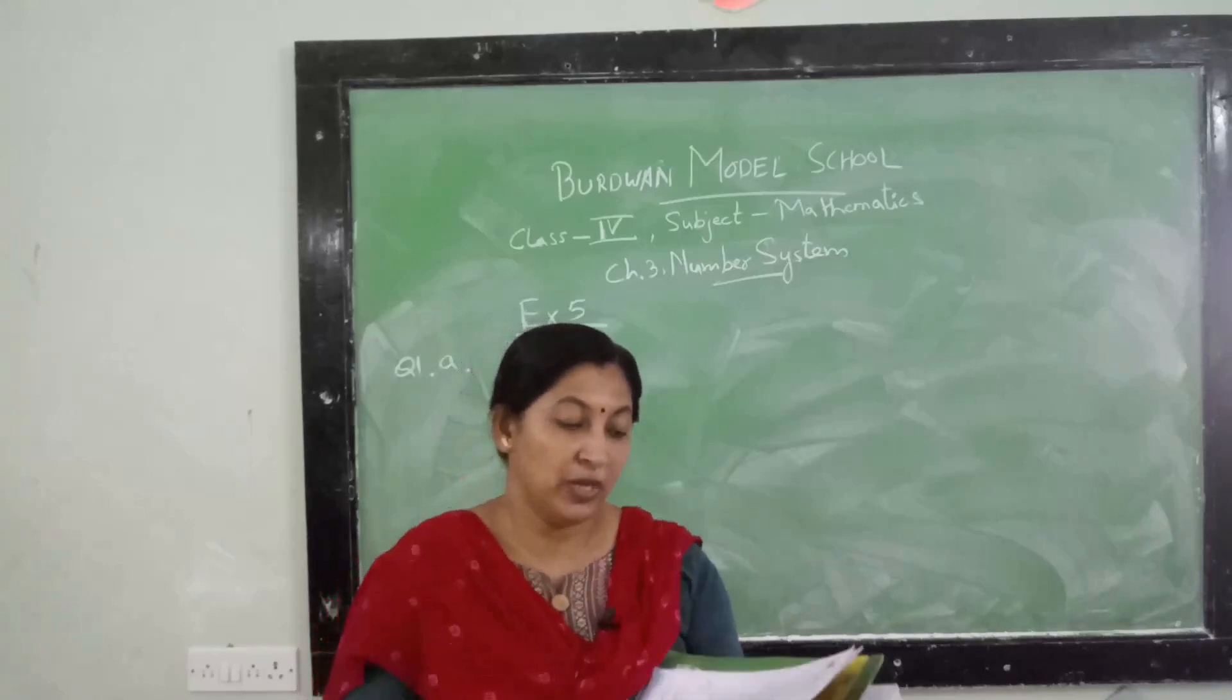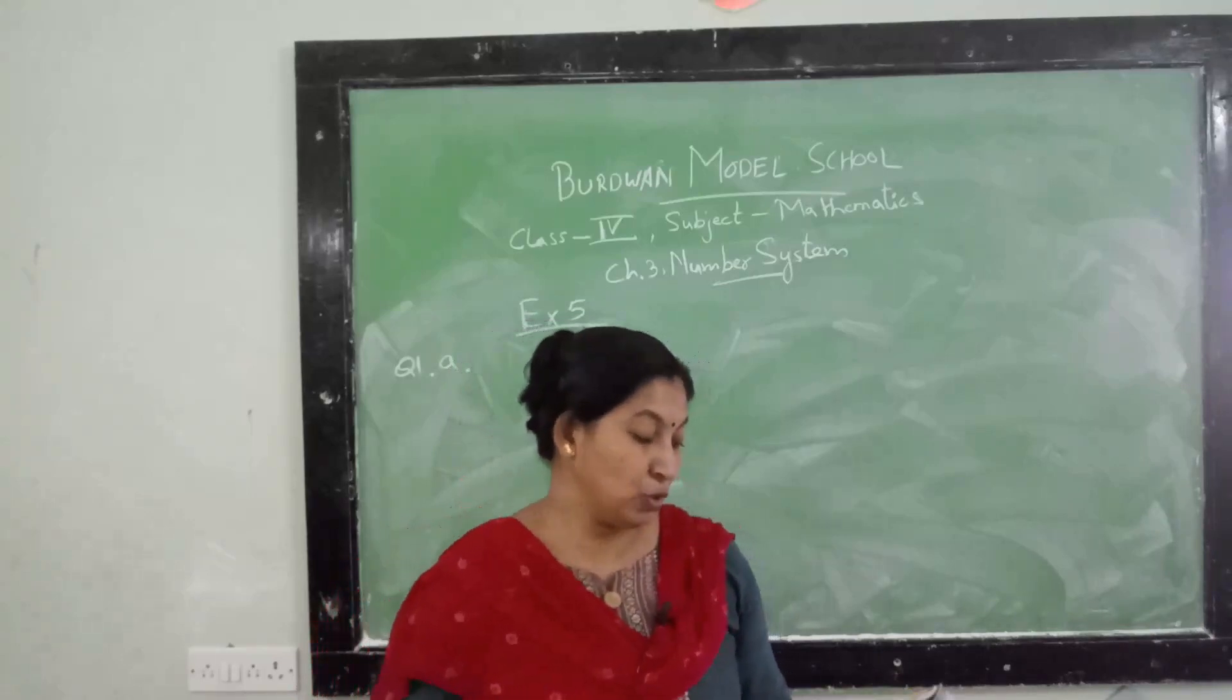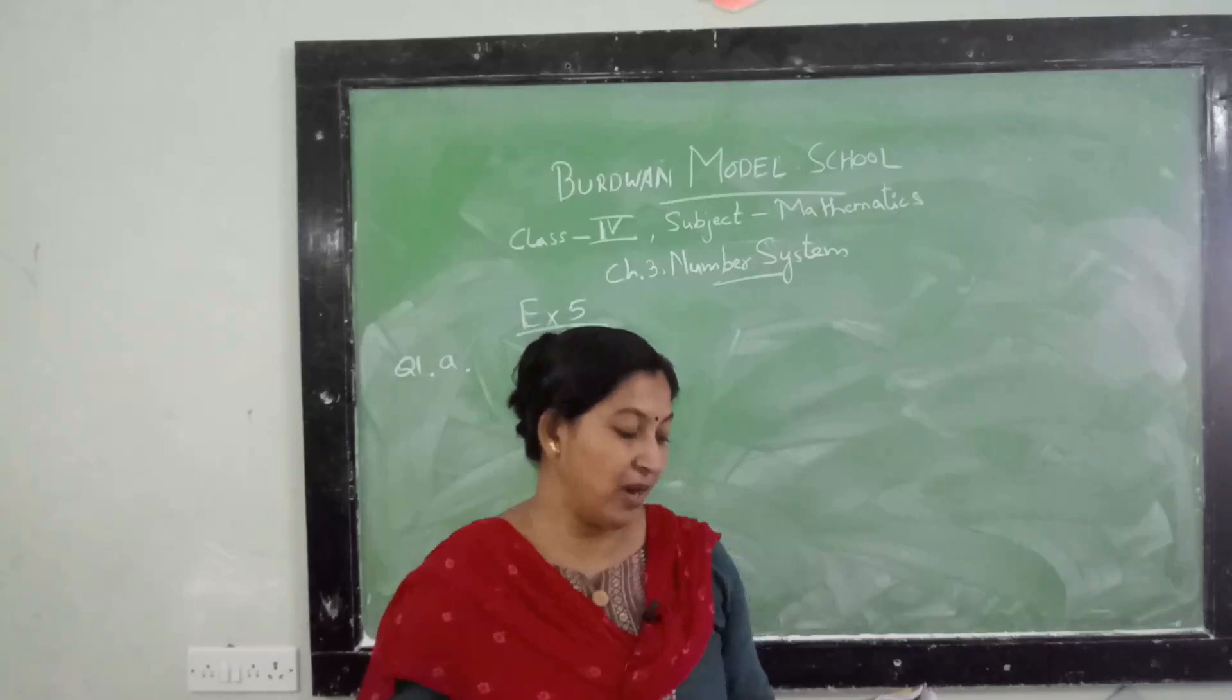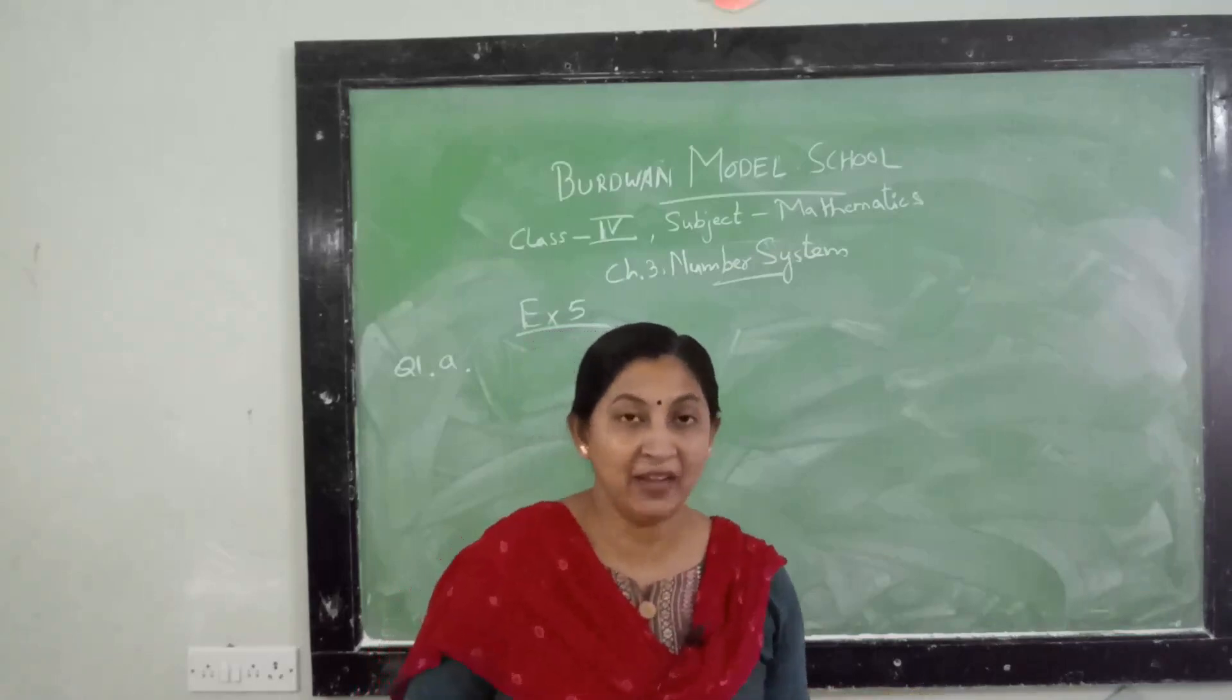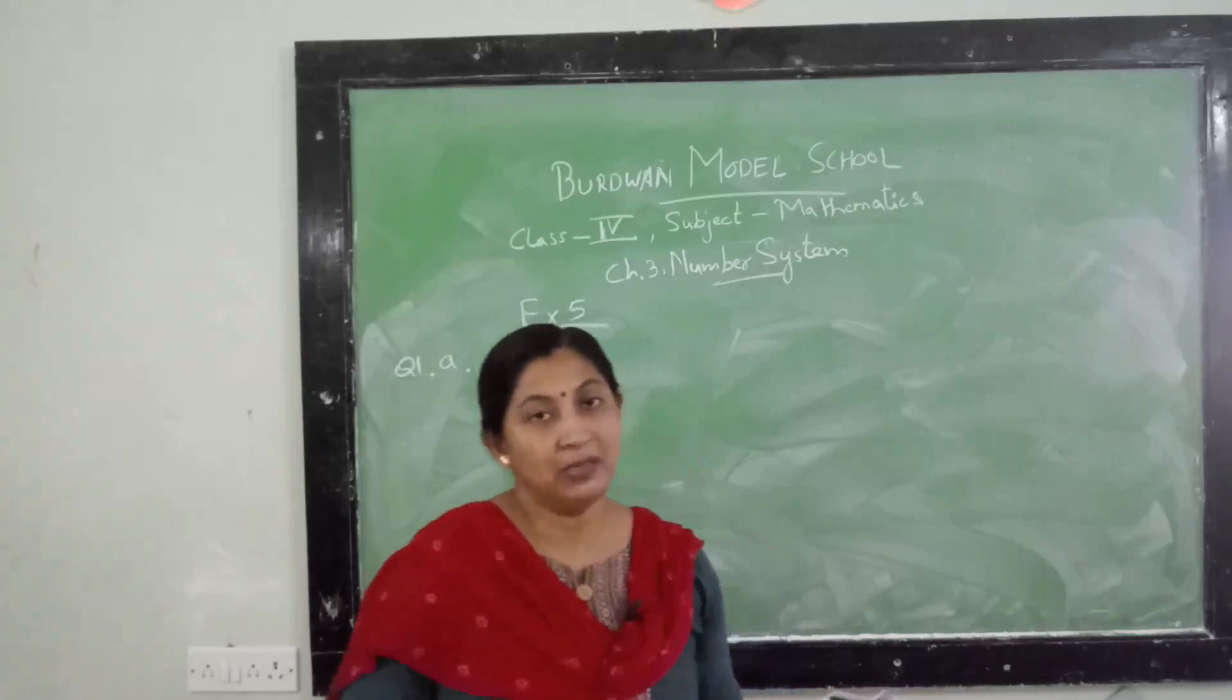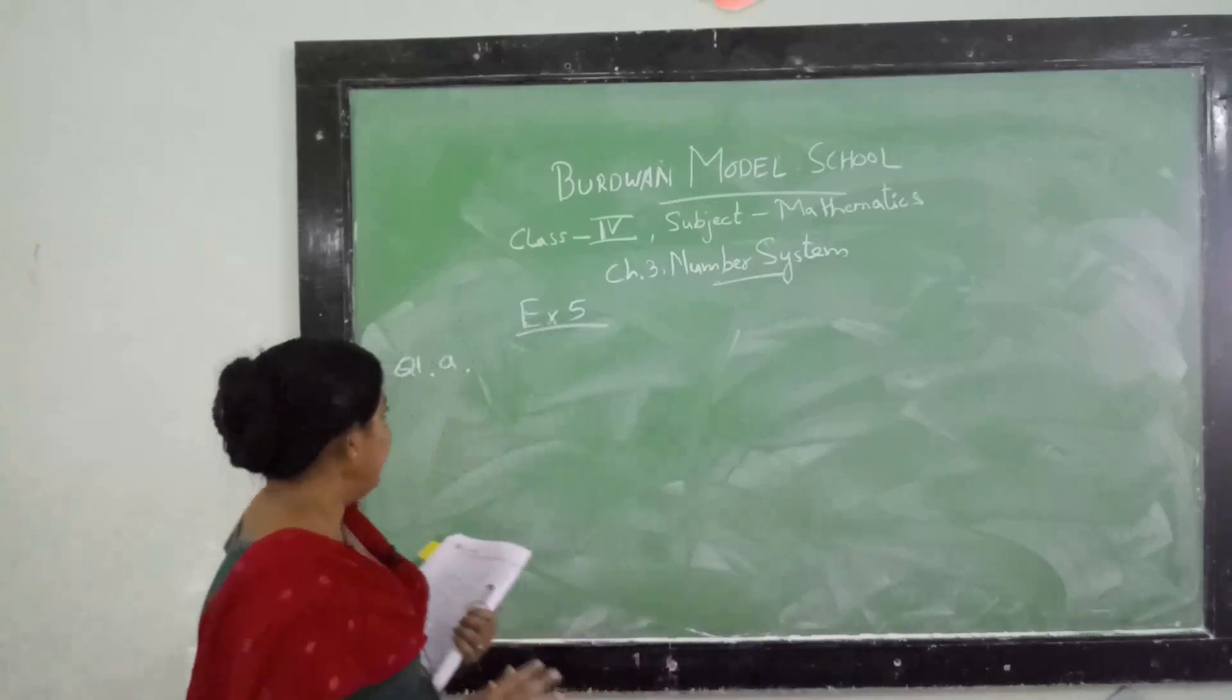From today we will start Exercise 5. In Exercise 5, the first question: compare the given pairs of numbers and write the appropriate symbol - greater than, equal to, or less than. The blank which is given, you have to write the greater than, equal to sign, or less than sign. See the figures then write it.